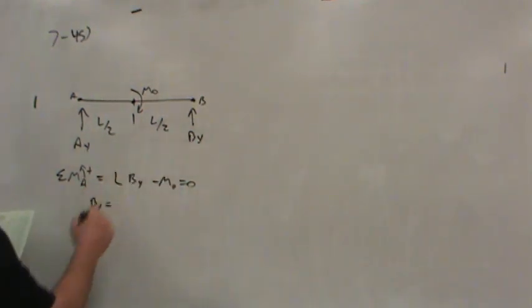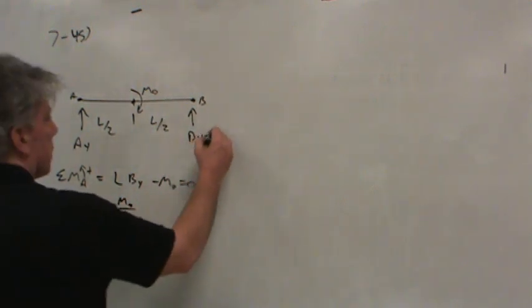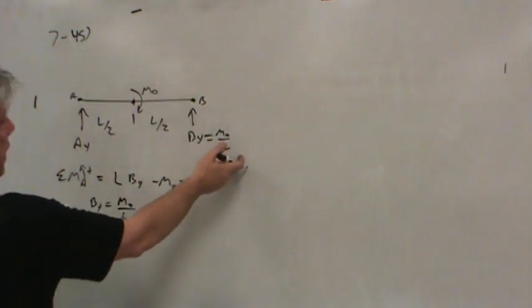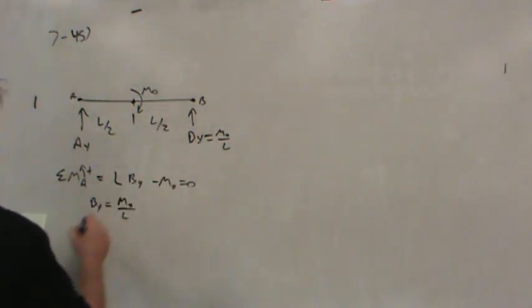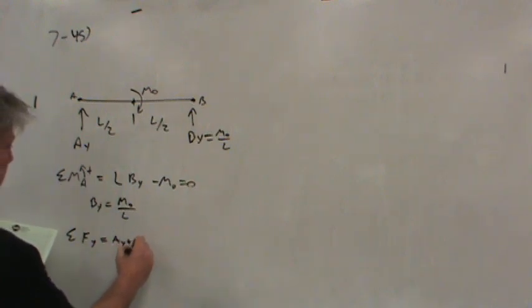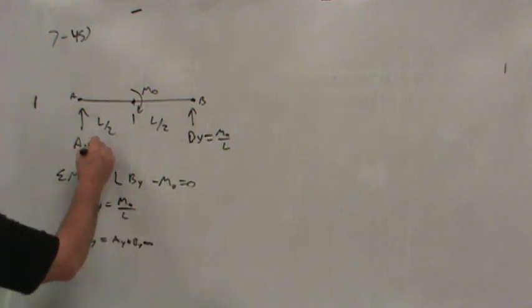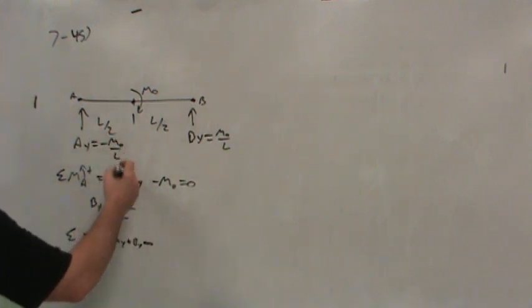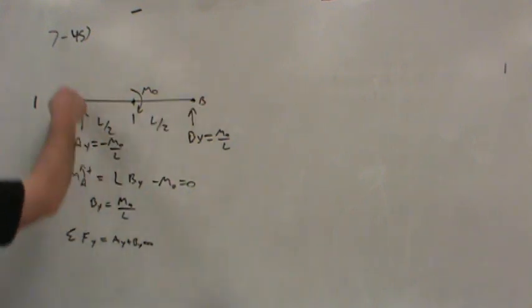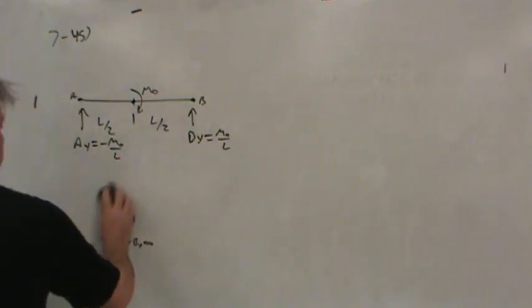So BY, the reaction load at the end is simply M0 over L. So whatever moment is externally applied, if we divide that by the length of the beam, that would be the reaction at B. Summing forces in the vertical direction, AY plus BY equals zero, tells us then that AY and BY are opposite, so this must be negative M0 over L. And that should make some sense. If you twist on the beam like this, it's going to push down here and pull up here, so AY will actually have to pull down to keep the beam in equilibrium. So that's the free body diagram.